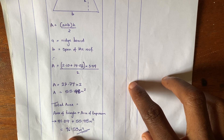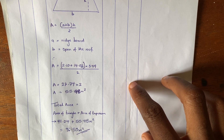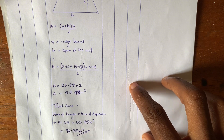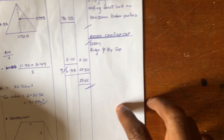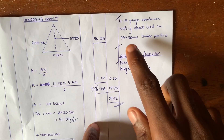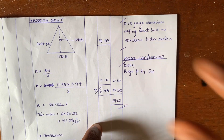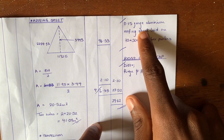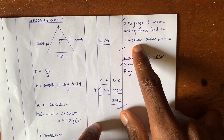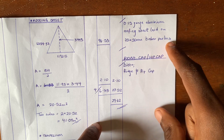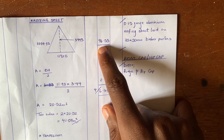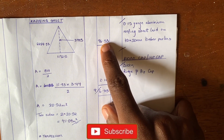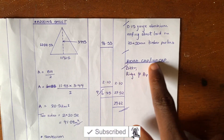So the total area of the roofing sheets is 96.53 m². To describe this item, we write: 0.15 gauge aluminium roofing sheets, laid on 75 × 50mm timber purlins. You measure the area as 96.53 m² and close the item description.